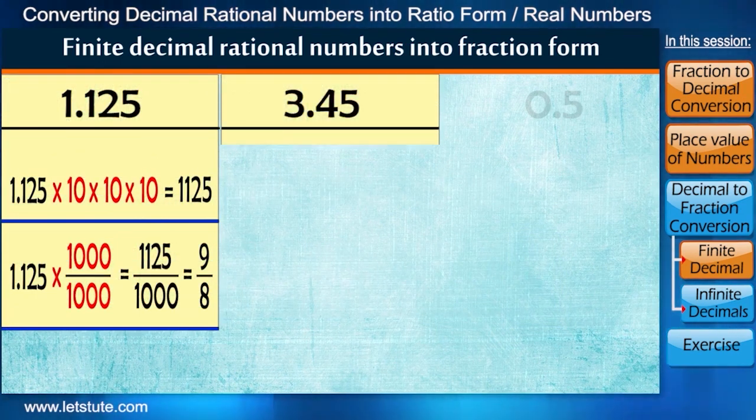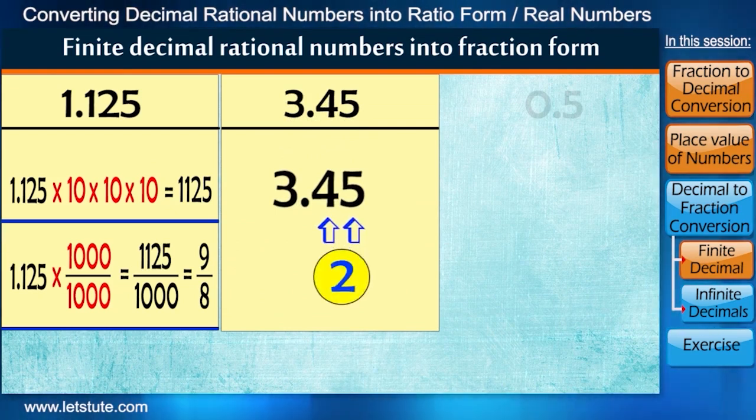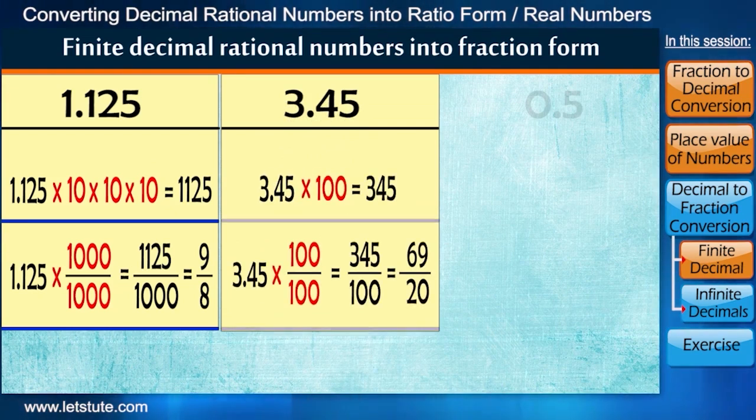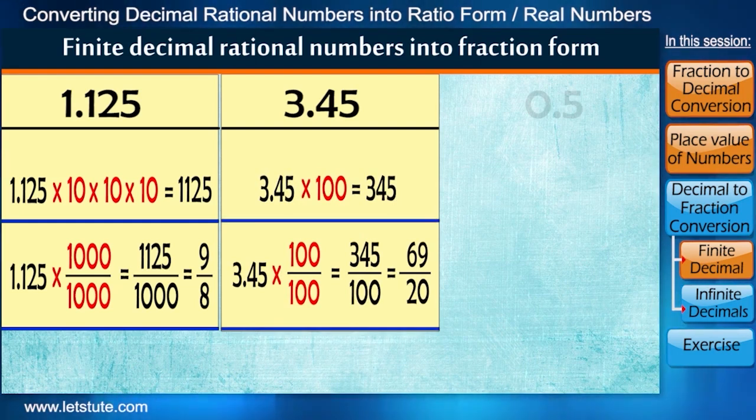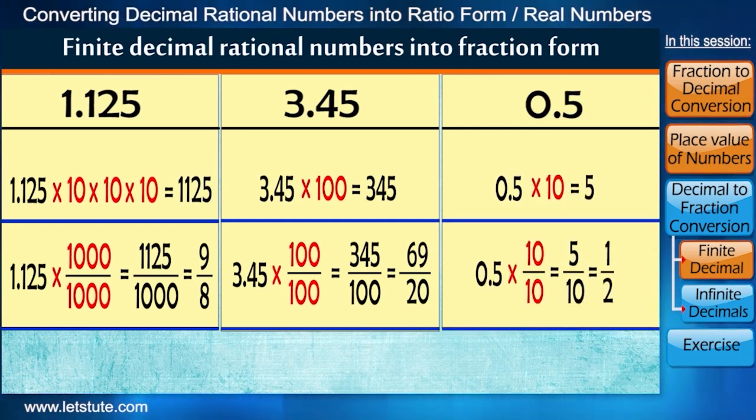Very same way, in the number 3.45, we have 2 digits after decimal point. So we multiply and divide by 100. In 0.5, we have only 1 digit after decimal point. So we multiply and divide by 10.